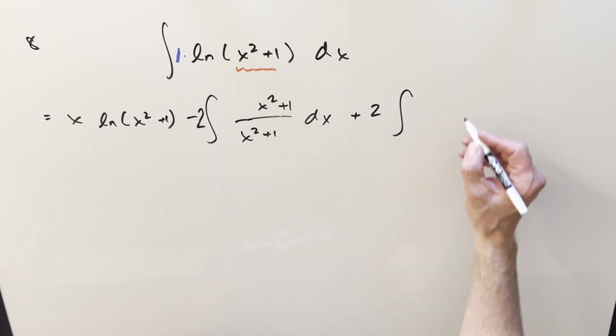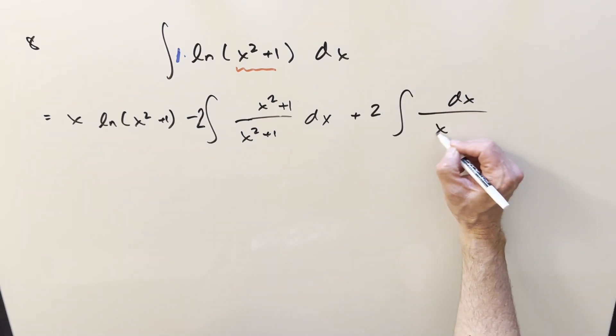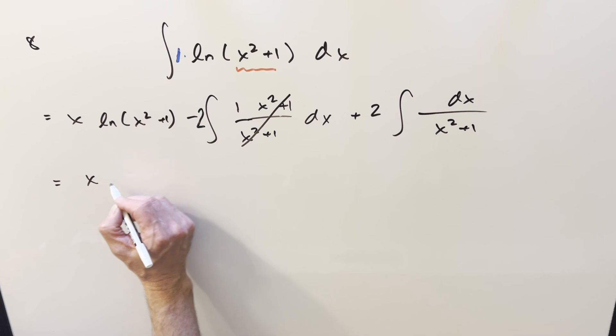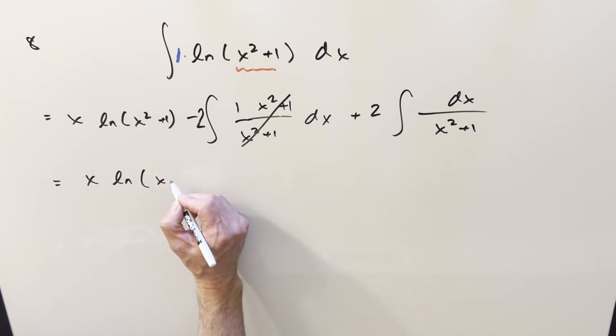And it's just going to be over the denominator, so it's just going to be dx over x squared plus 1. But if we cancel this, we're just integrating 1. So I think we can basically finish it off. So it's going to be x ln x squared plus 1.